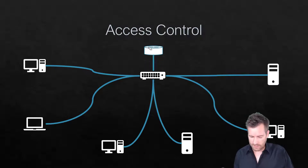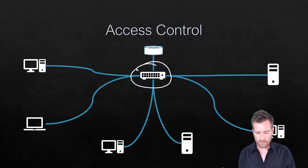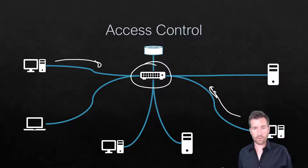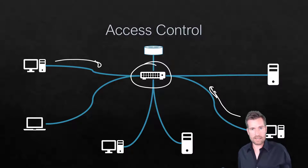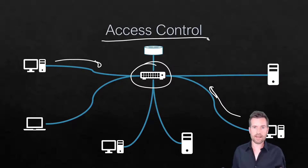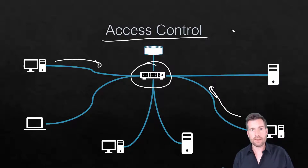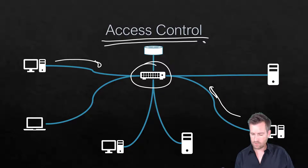Traditionally, LANs had hubs in the middle, and hubs are half duplex — only one device could talk at a time. If two devices talked simultaneously, a collision occurred. We need some access control method to mitigate or stop collisions from happening — some way that devices on a network can still communicate without collisions, or at least deal with them when they occur.